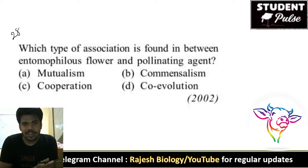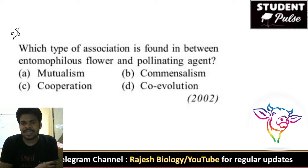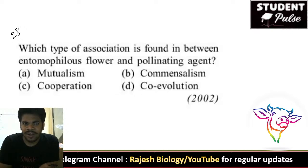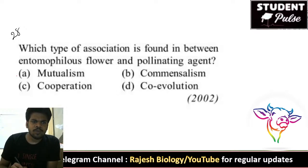Twenty-eighth question: which type of association is found between an entomophilous flower and its pollinating agent? You may be confused with co-evolution, but the pollinator and flower are co-evolved. However, when they ask about a specific flower name and its pollinating agent, the answer is definitely mutualism.